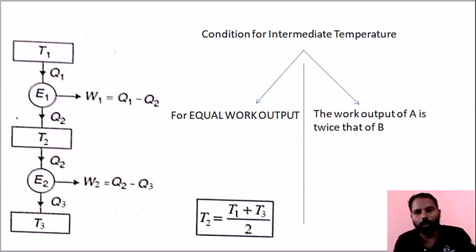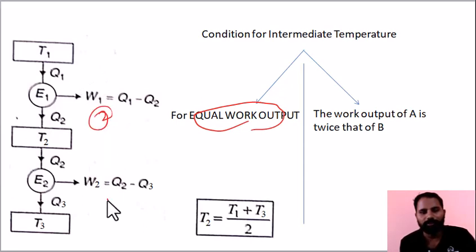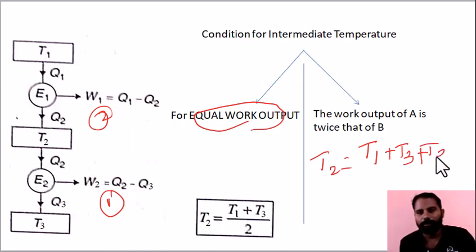Next case: work output of A is twice that of B. We know for equal work output it's arithmetic mean T1 plus T3 by 2. But when work output of A is twice that of B, intermediate temperature T2 equals T1 plus 2T3 divided by 3.